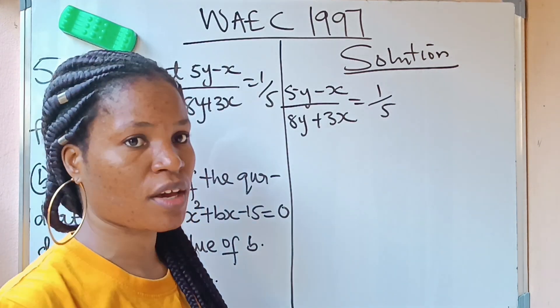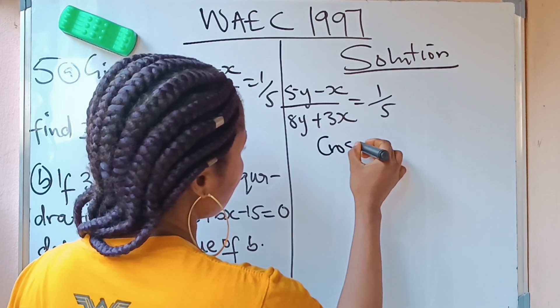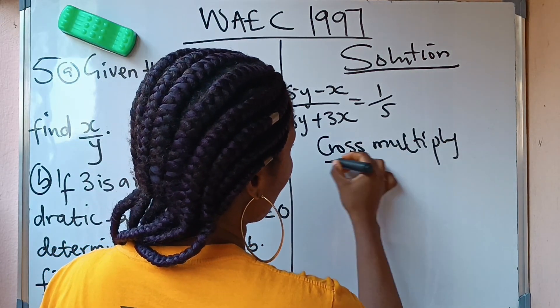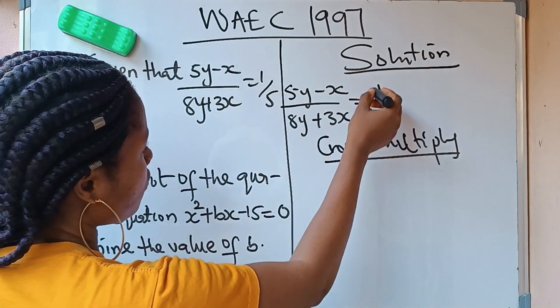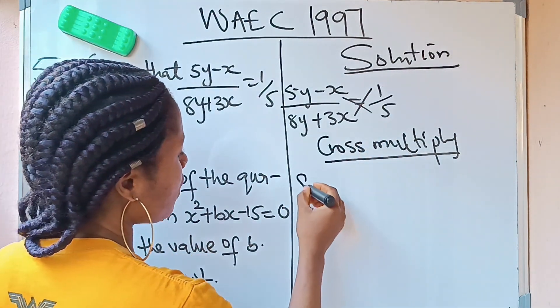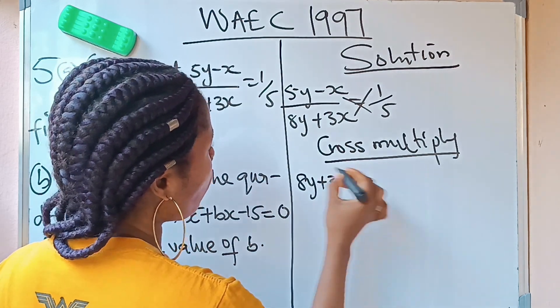So let's cross multiply. When you do that, you are going to have 1 times (8y + 3x) equals 5 into (5y - x).